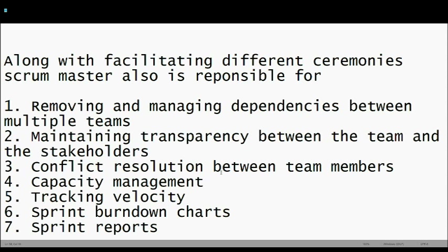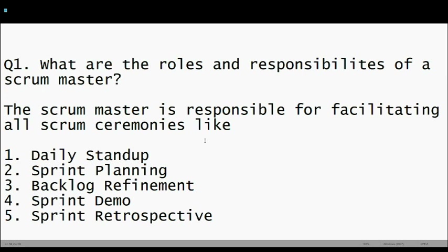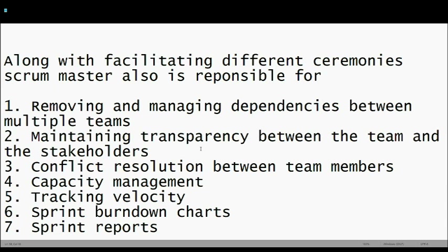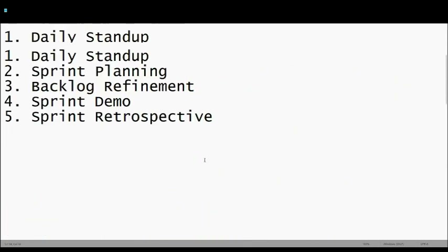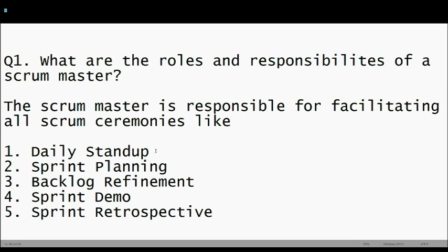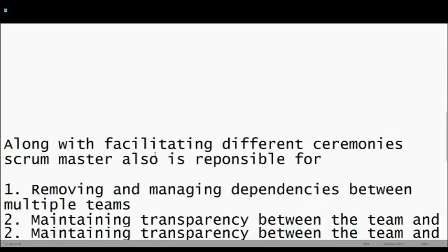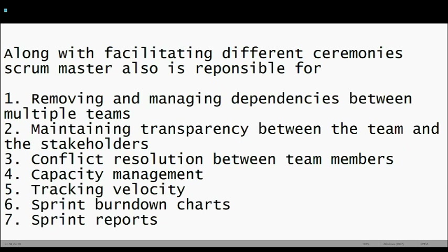To recap, the Scrum Master is responsible for: facilitating all Scrum ceremonies from daily stand-up to sprint planning to backlog refinement to sprint demo to sprint retro; managing dependencies between multiple teams; maintaining transparency between the team and stakeholders; conflict resolution; capacity management; tracking velocity; creating sprint burndown charts; and creating sprint reports. In part two we'll go deeper into the ceremonies, and in part three into capacity charts, velocity tracking, burndown charts, and sprint reports.